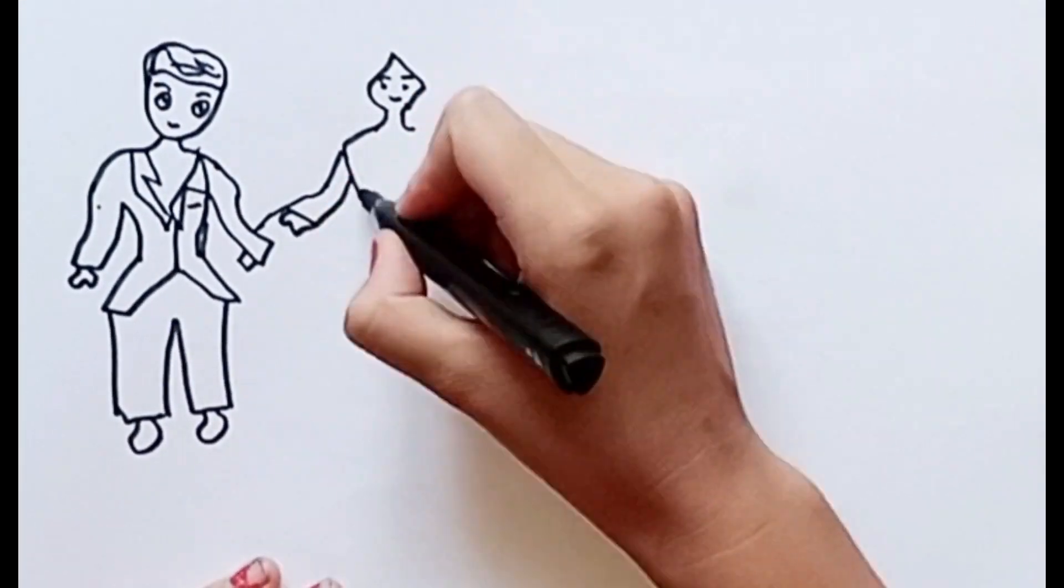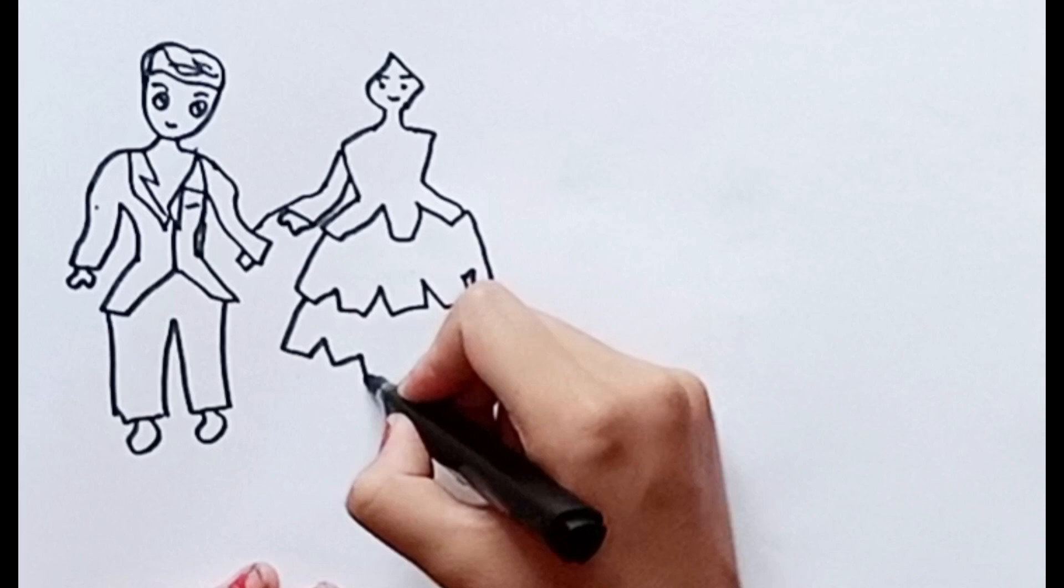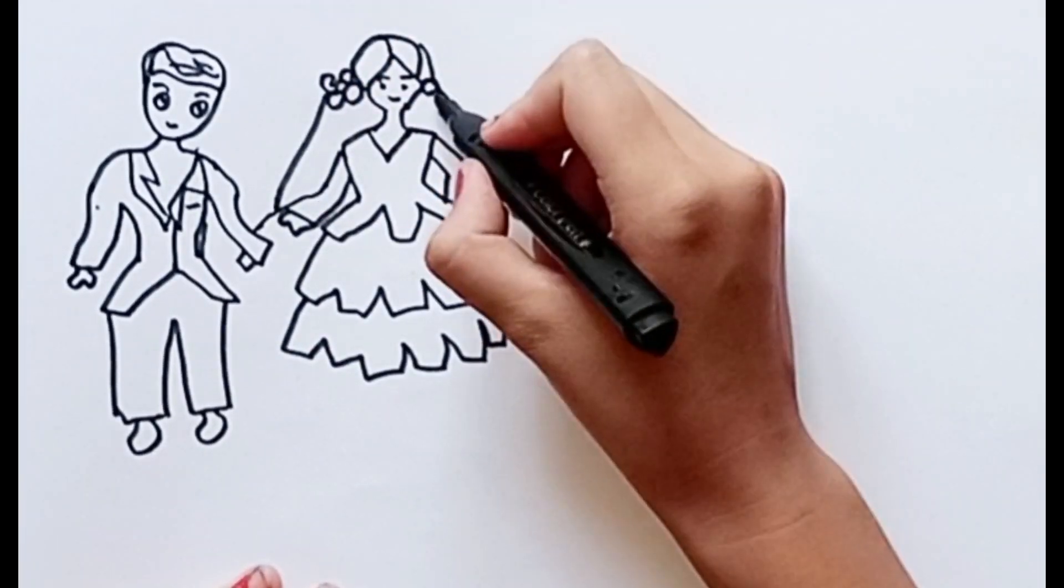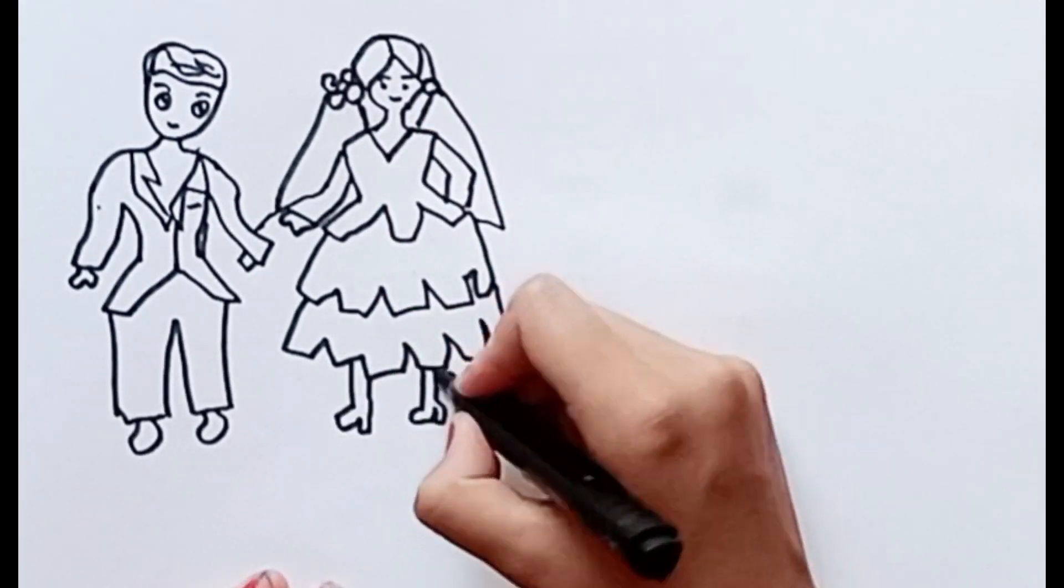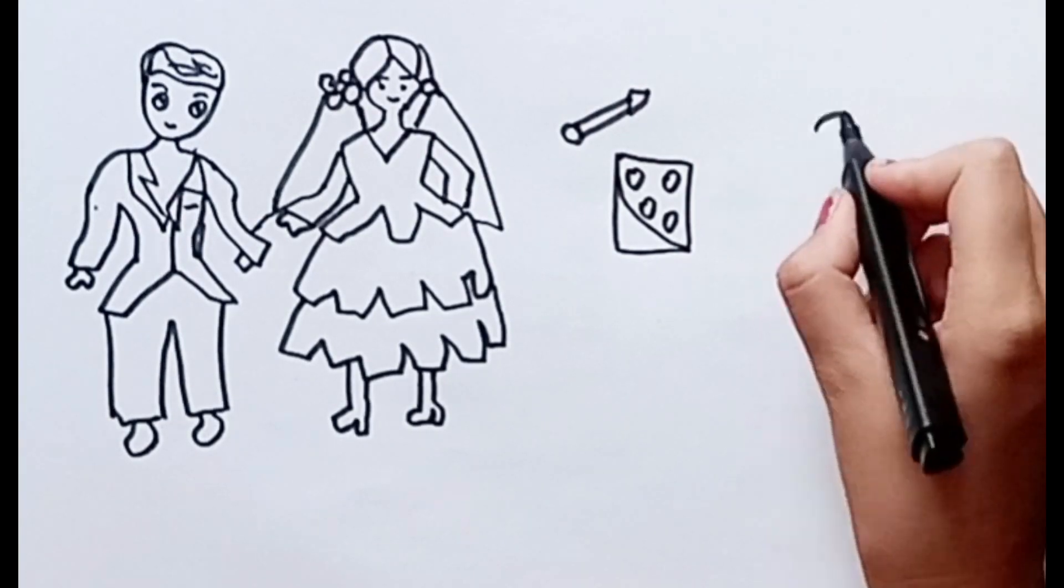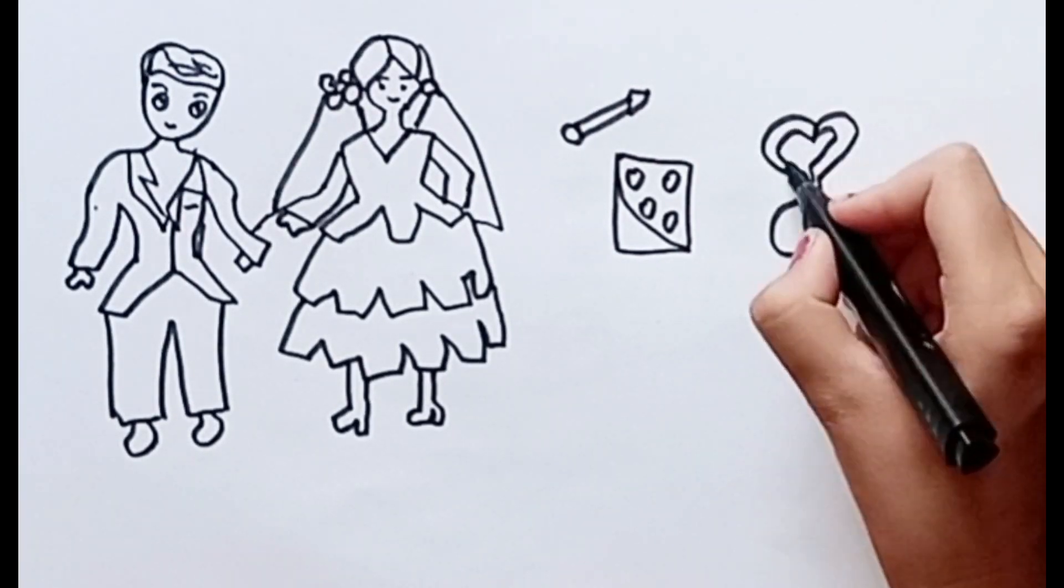[singing ABC song: A B C D E F G H I J K L M N O P Q R S T U V W X Y and Z] Now I know. I am drawing a bride.